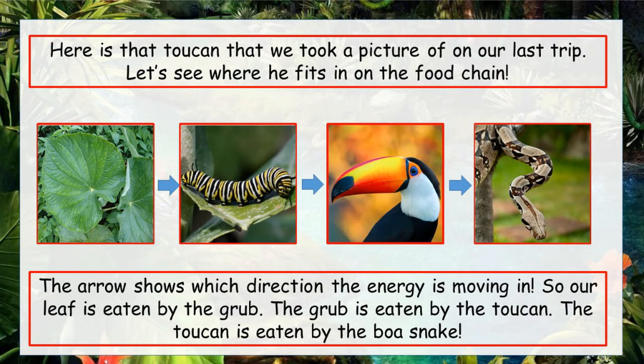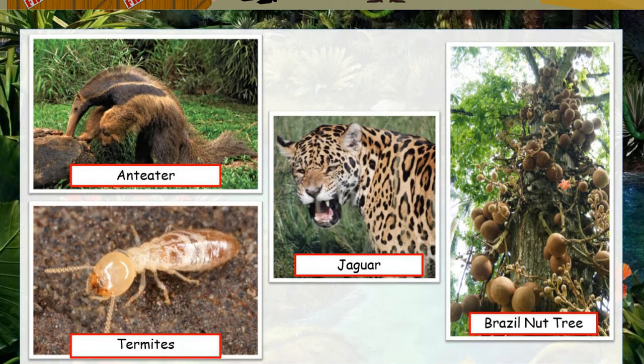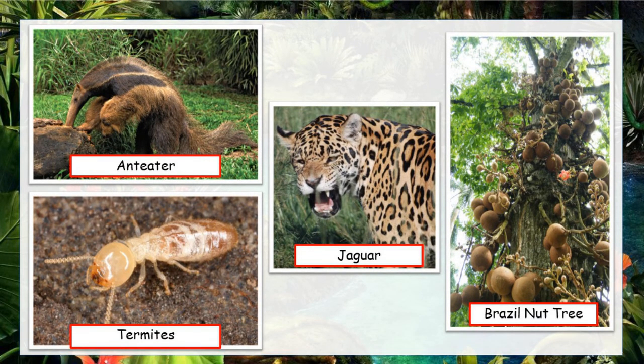Here's that toucan that we took a picture of on our last trip. This is how he fits in on the food chain. The arrows show which direction the energy is moving in — the leaf is eaten by the grub, the grub is eaten by the toucan, and the poor toucan is eaten by the boa constrictor snake. Now, here are four pictures that we took on our last trip out. Can you put these four things in the correct order on the food chain? Pause the video and try to write down the answer.